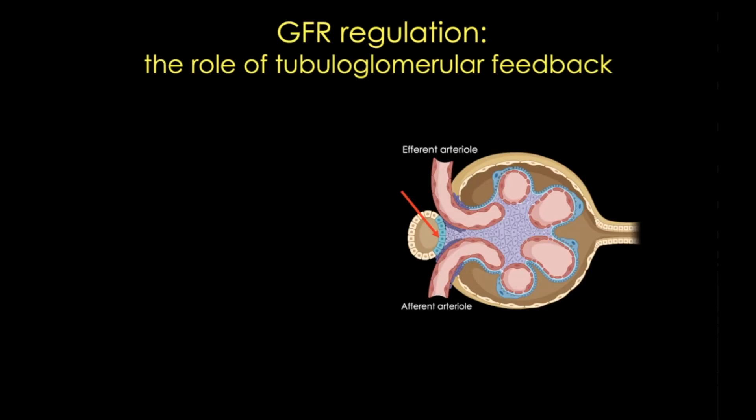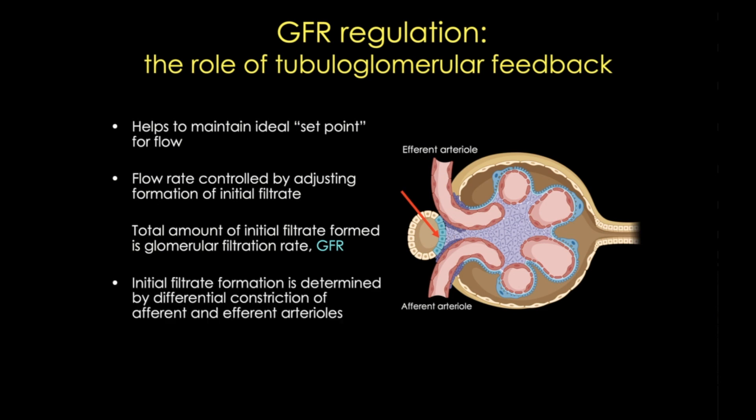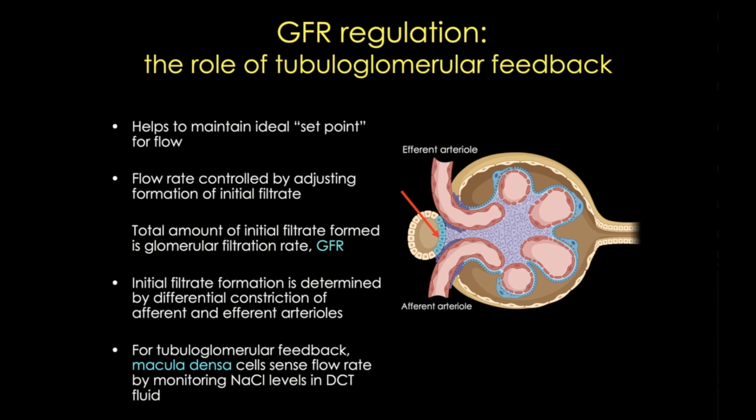So what does this apparatus actually do? The basic function is to aid in auto-regulation of the glomerular filtration rate and help control blood pressure. The flow rate is controlled by adjusting formation of the initial filtrate, and filtrate formation can be controlled by constriction of the afferent and efferent arterioles. The job of the macula densa in this process — called tubuloglomerular feedback — is to sense the flow rate by monitoring the sodium chloride content of the fluid in the distal tubule.